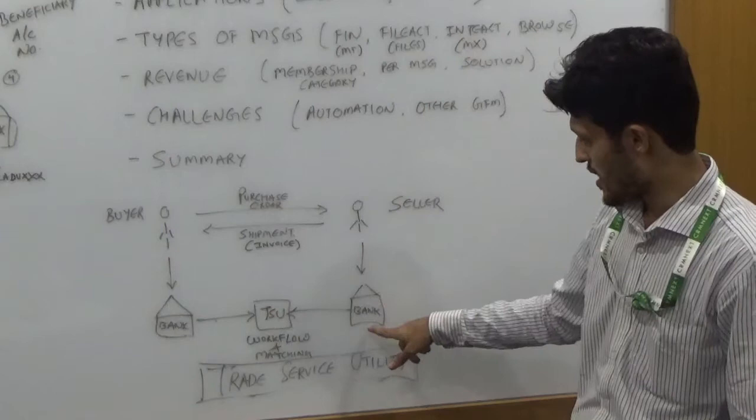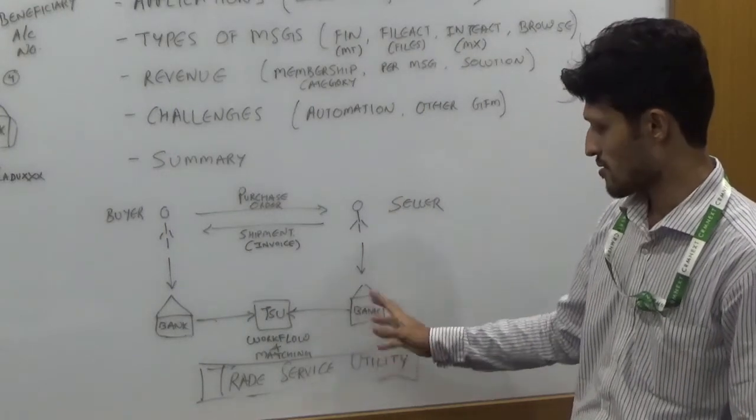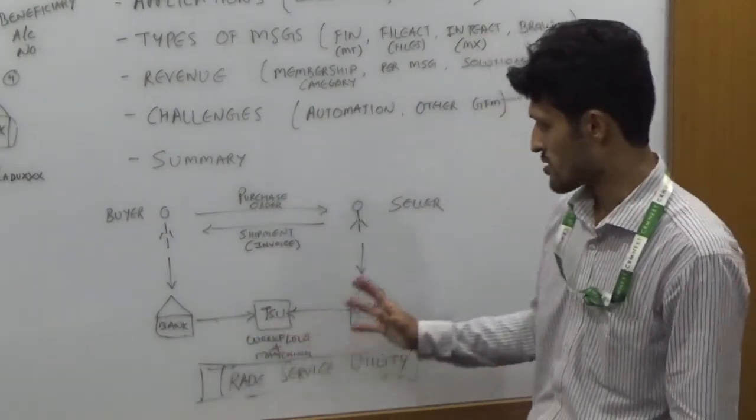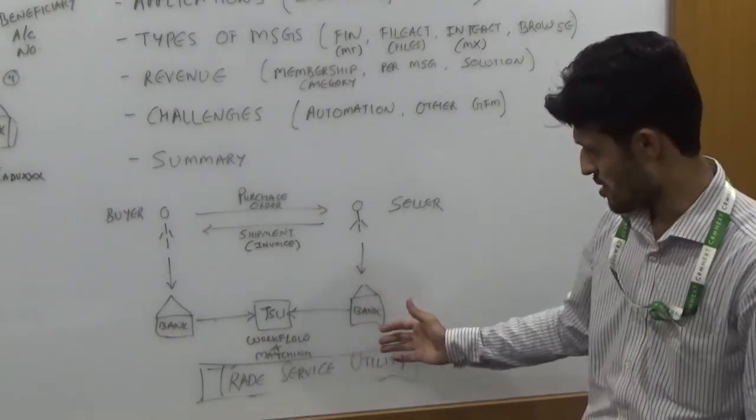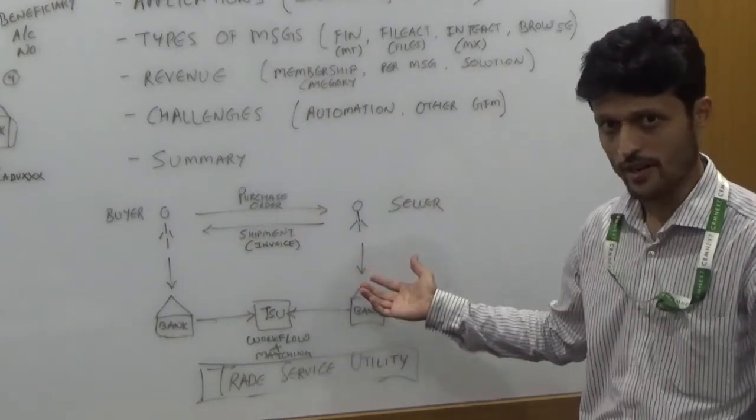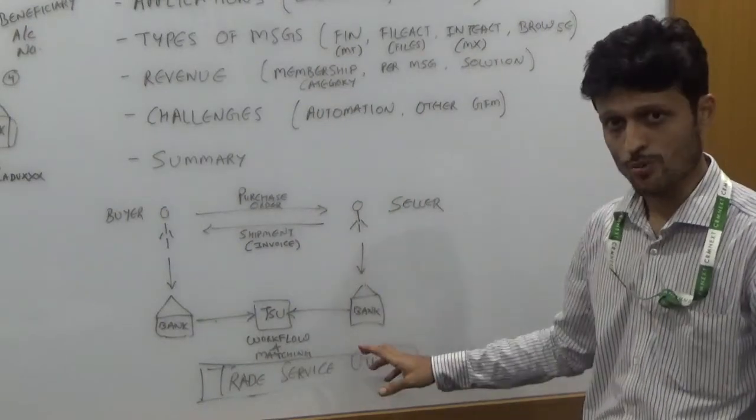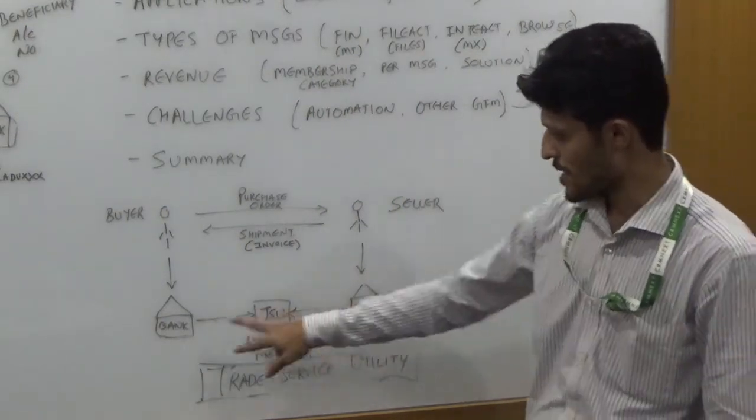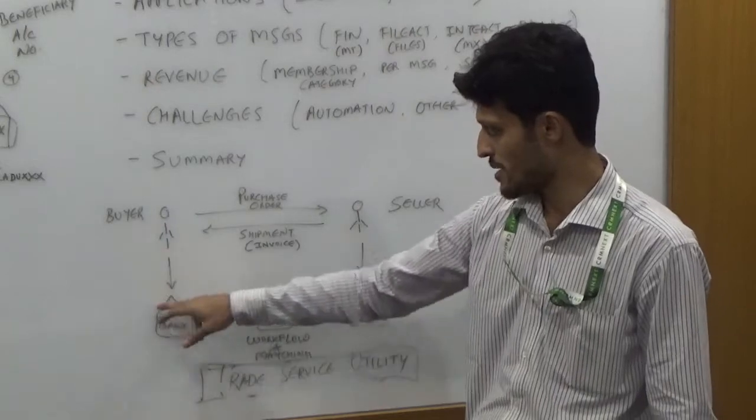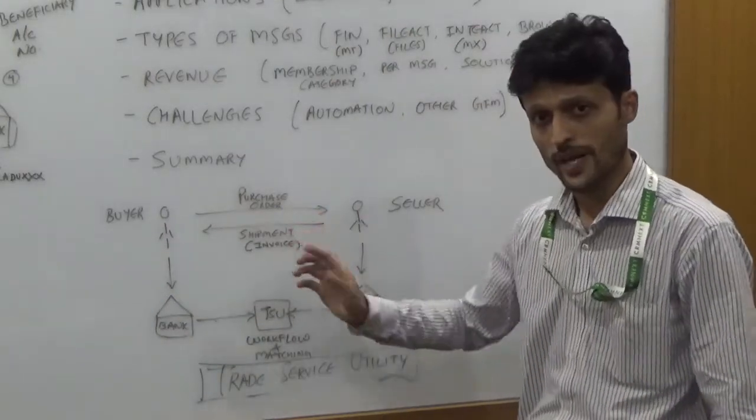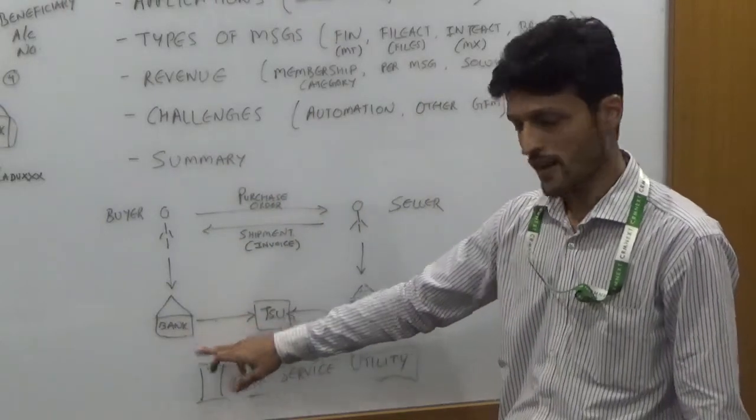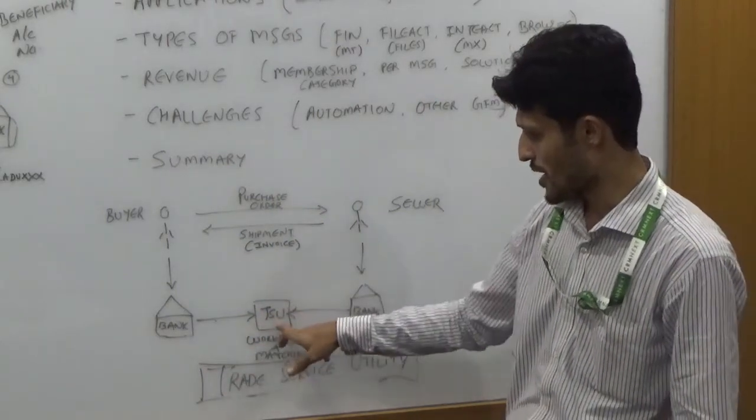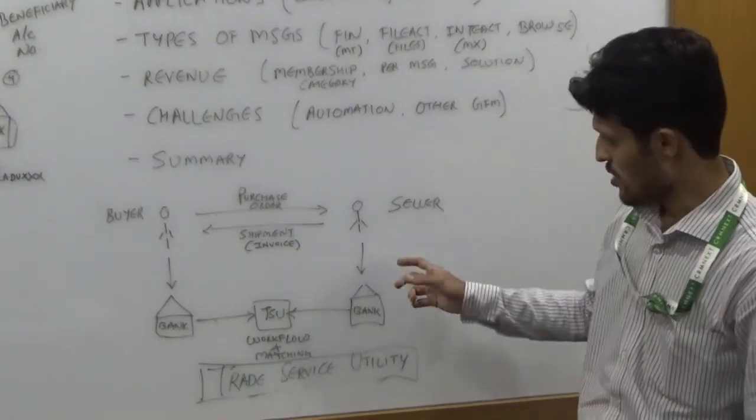In response to that, the seller is going to approach the bank and check the credibility of the buyer and receive a letter of credit for the shipment and insurance. The same is being done at the buyer's end because the buyer also made a purchase order and sent it across. Both banks are going to communicate with the help of trade service utility.